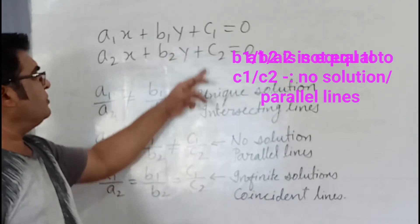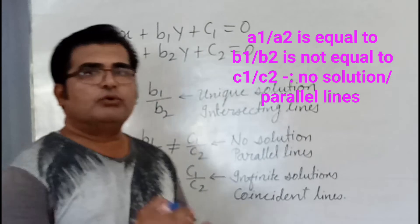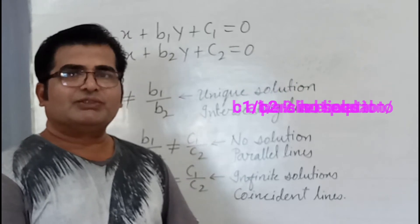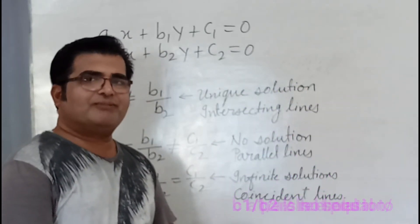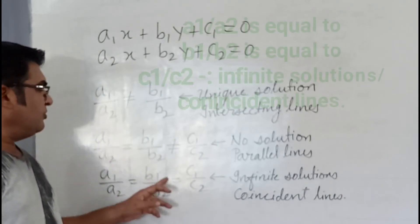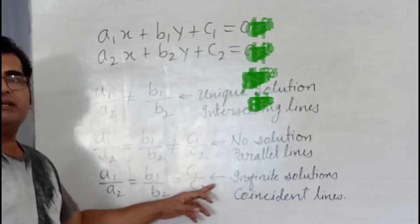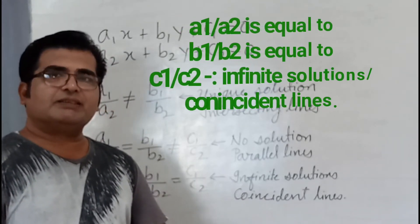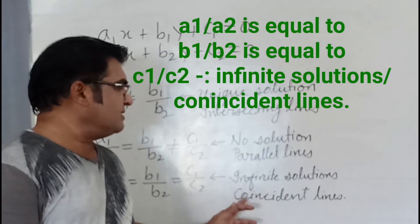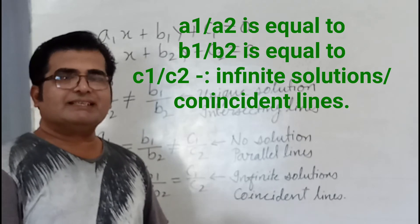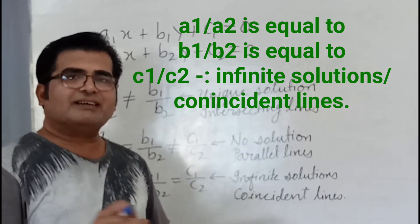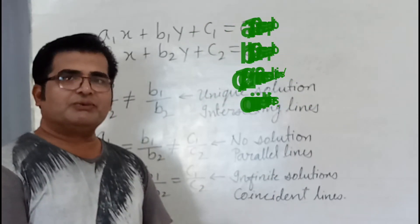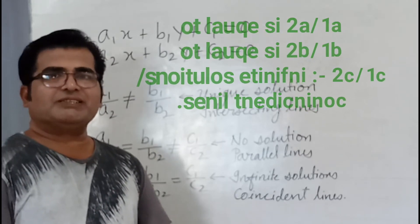When a1/a2 equals b1/b2 but is not equal to c1/c2, there will be no solution, and in graphical representation there will be parallel lines — so you need not solve it. When a1/a2 = b1/b2 = c1/c2, you will have infinitely many solutions, and in graphical representation there will be coincident lines, meaning one line lies on the other.